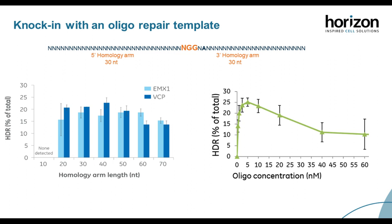We examined the length of homology arms and concentration of single-stranded donor oligos and their effects on HDR efficiency. Using guide RNAs targeting two different genes and varying homology arm length, we found that 30 to 40 nucleotides of homology on either end of the insert is optimal for HDR incorporation. We also found that between 2.5 and 10 nanomolar concentration of the donor oligo gives the most efficient HDR integration. Because HDR is much less efficient than NHEJ, considering these aspects during experimental optimization is important.